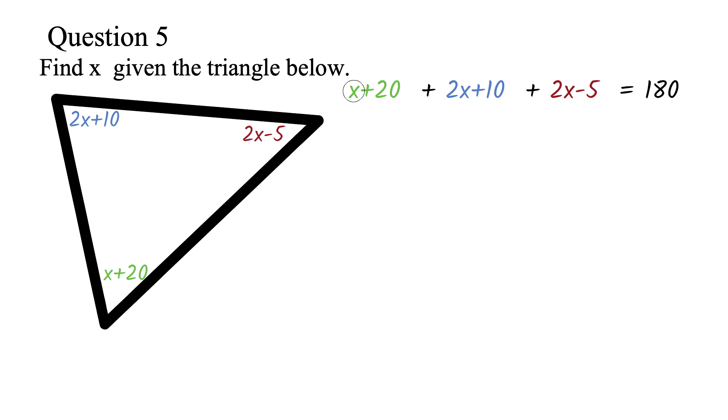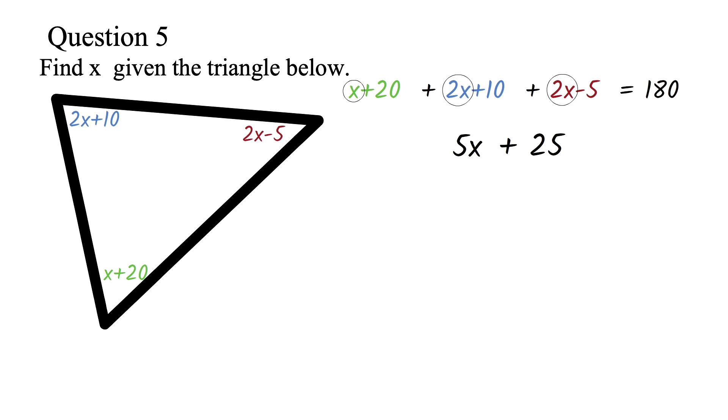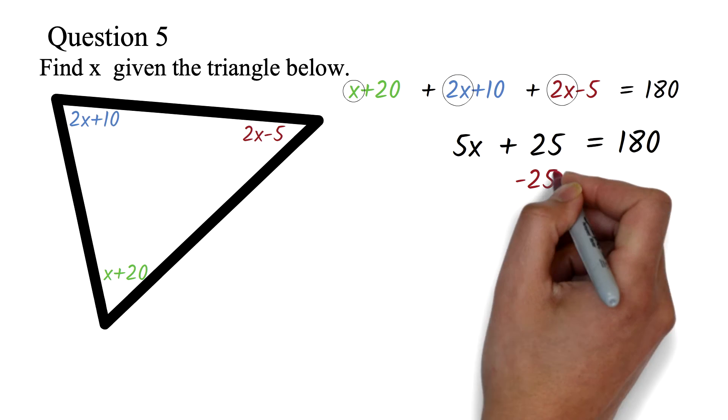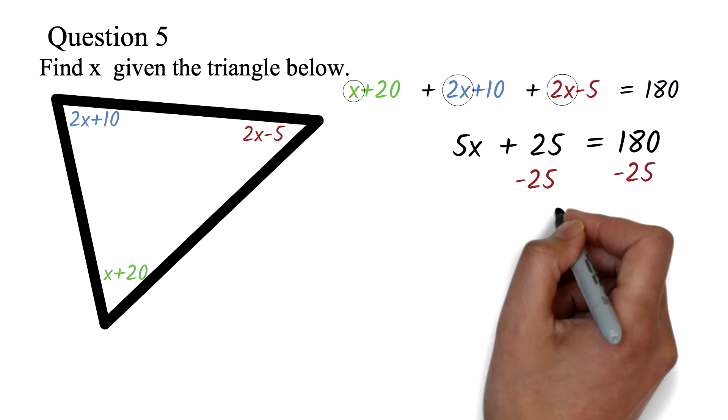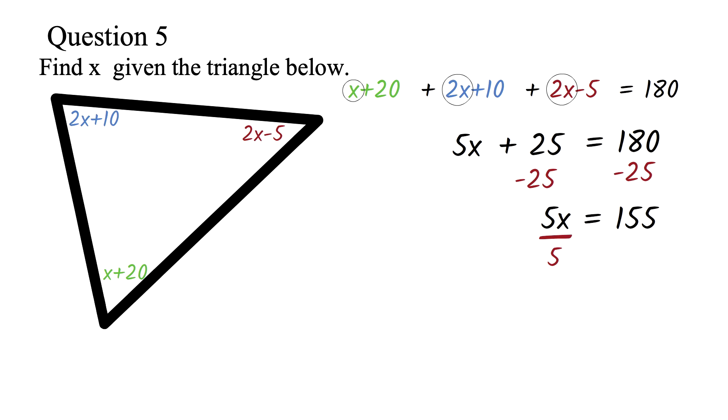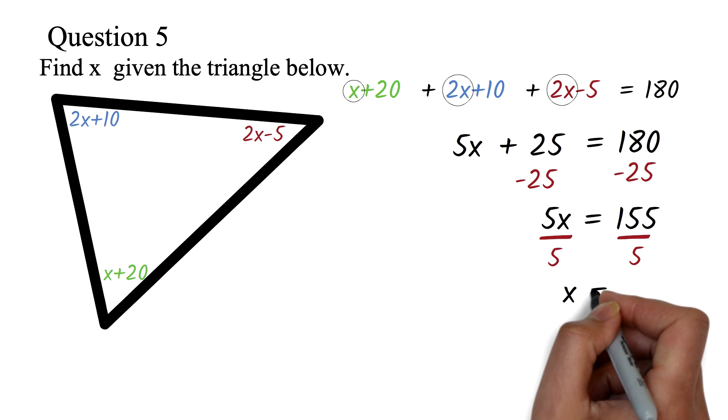We add all the x terms. 1x plus 2x plus 2x to get 5x. Then we add all the numbers. 20 plus 10 minus 5 to get 25. So we have 5x plus 25 equals 180. We have a two-step equation. We subtract 25 from both sides to get 5x equals 155. Then we divide both sides by 5 to get x equals 31.